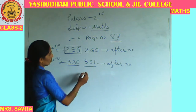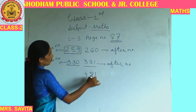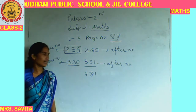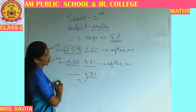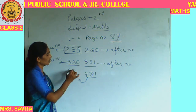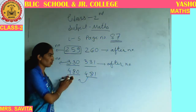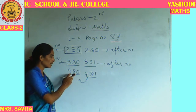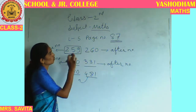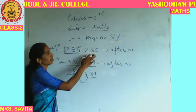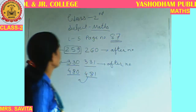Let's take another number: 481. What is the before number of 481? 480. Right. So 480 is the before number and 481 is the after number. Like this: 480, 481 — 330, 331 — 259, 260. You have to understand the concept of before and after numbers.